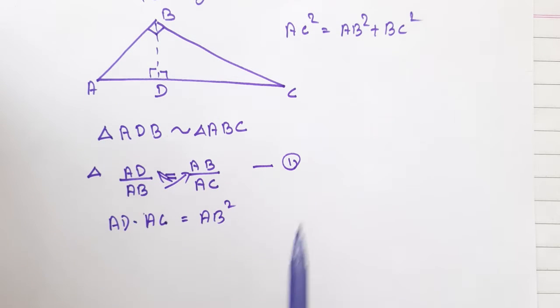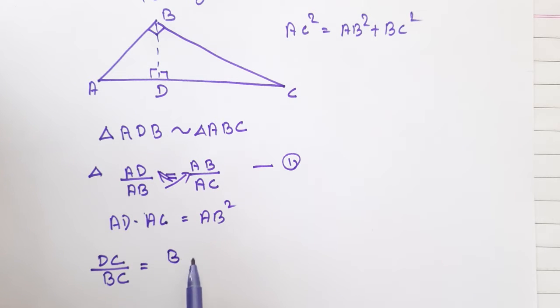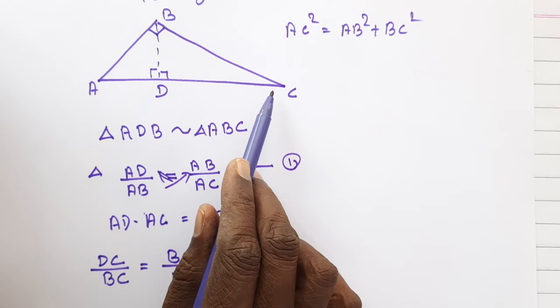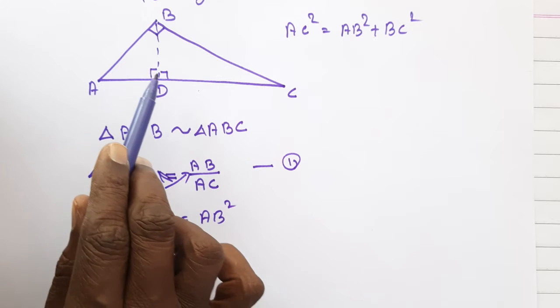BDC. Okay, DC by BC is equal to BC by what? BC is large, hypotenuse here.